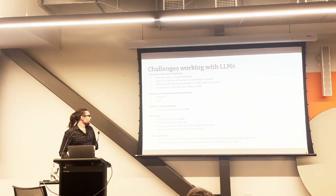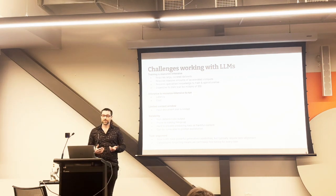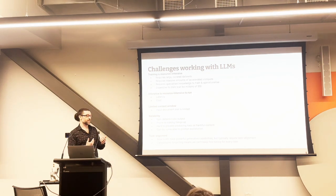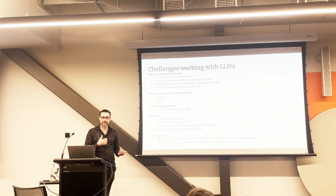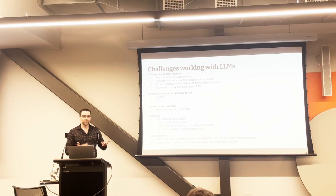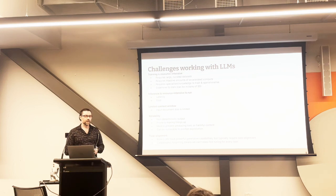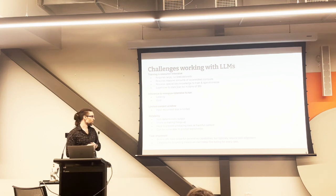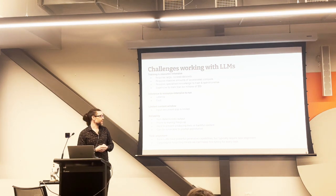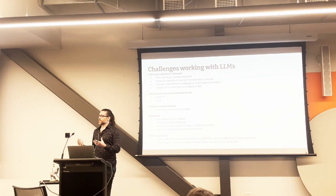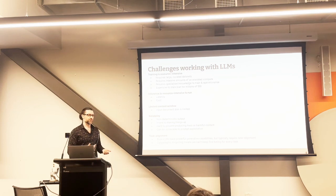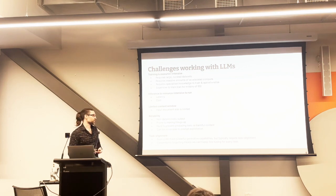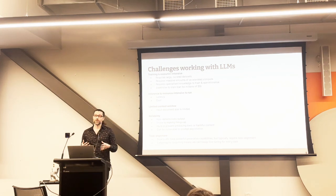We also have challenges around reliability. The output is quite often non-deterministic - even more so than you might be expecting. There are things you can do like turning the temperature down, but even then it's not necessarily guaranteed to be deterministic. It's prone to making things up - some people call it hallucinations or confabulations. I think just saying it's wrong is probably more helpful, but hallucinations is the word we've landed on. And it can be hard to prevent it from producing output that you don't want to expose to users - harmful or toxic content.